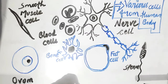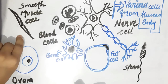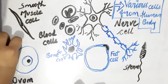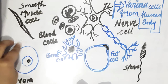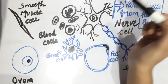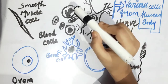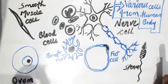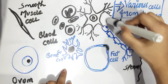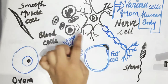Let me go through the cells one by one. First, we have smooth muscle cells — these are the muscle cells of our body. We also have blood cells, which are used to create many functions in the body. And this here is the nerve cell.